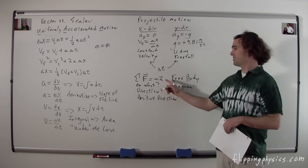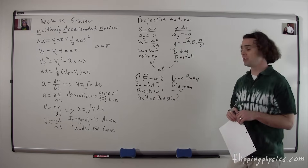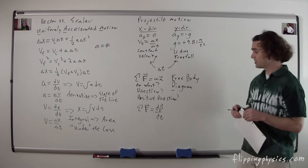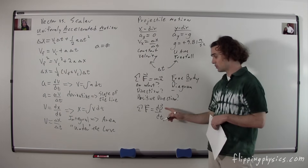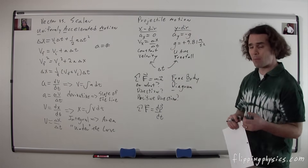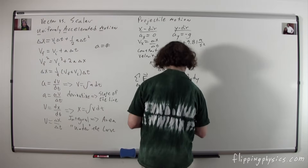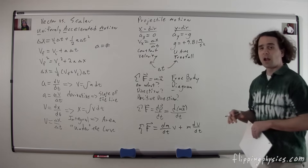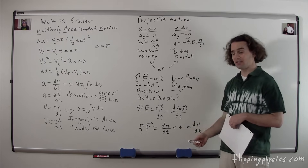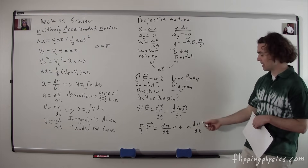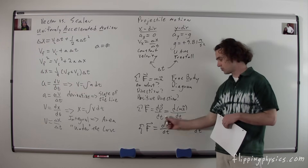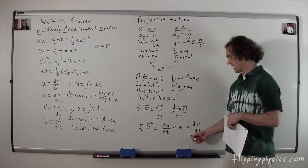An interesting thing about Newton's second law: F = ma is not quite the full picture. A better approximation uses the derivative: the net force equals the derivative of momentum as a function of time, where force and momentum are both vectors. Since momentum is mass times velocity, the full form is the net force equals dm/dt times velocity plus mass times dv/dt. We usually assume the mass is not changing, so the dm/dt term goes to zero, and you end up with net force equals mass times acceleration.